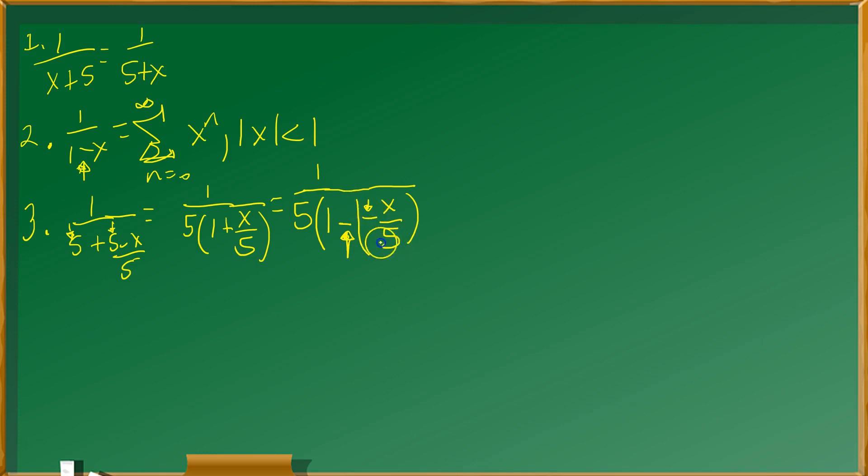So basically you group those into a unit like that. Once you have that in place, next stage in the process is this one. Observe over here that again back at stage 3, that 1 5th you can pull out. That's a constant multiplying it. And then the rest is 1 5th times 1 minus the negative of x over 5.